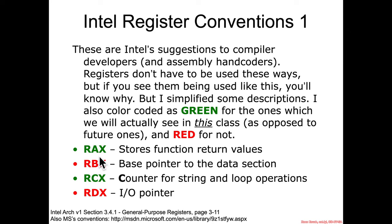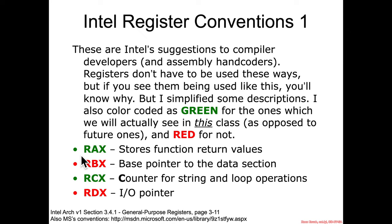For instance, RAX — in this class we will see it storing function return values. What we're not going to see is Intel's original suggestion that A be the accumulator, where assembly would accumulate results back into the AX or RAX register. Compilers don't tend to do that as much anymore.